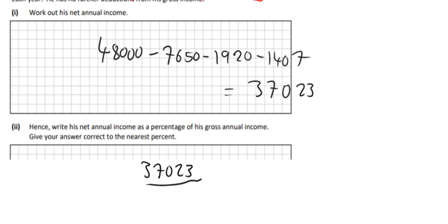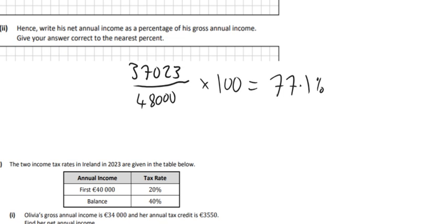And we put it over his gross income, so what he earns all together. So that's the 48,000. That's before any tax was paid. And then we just multiply by 100 to turn it into a percentage. And we get 77.1%. And that's all.